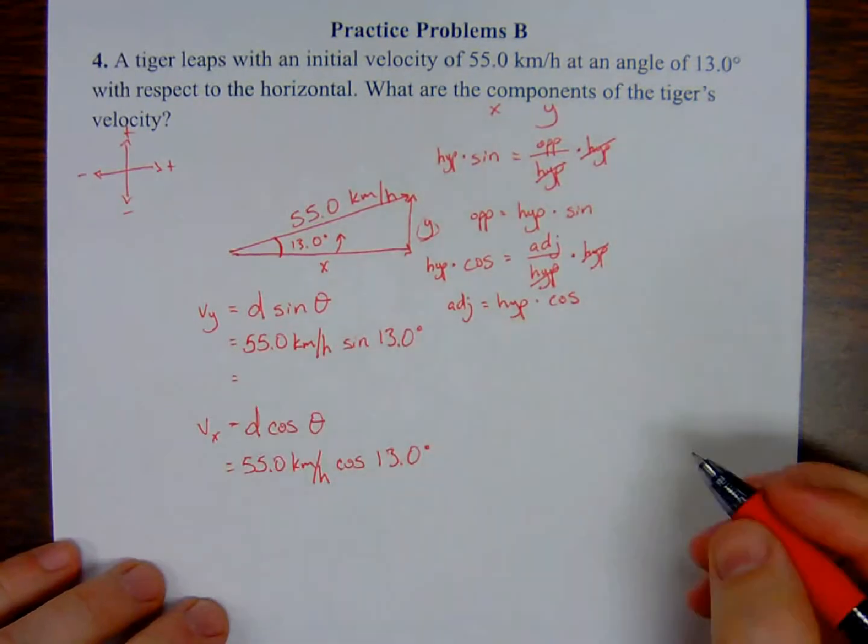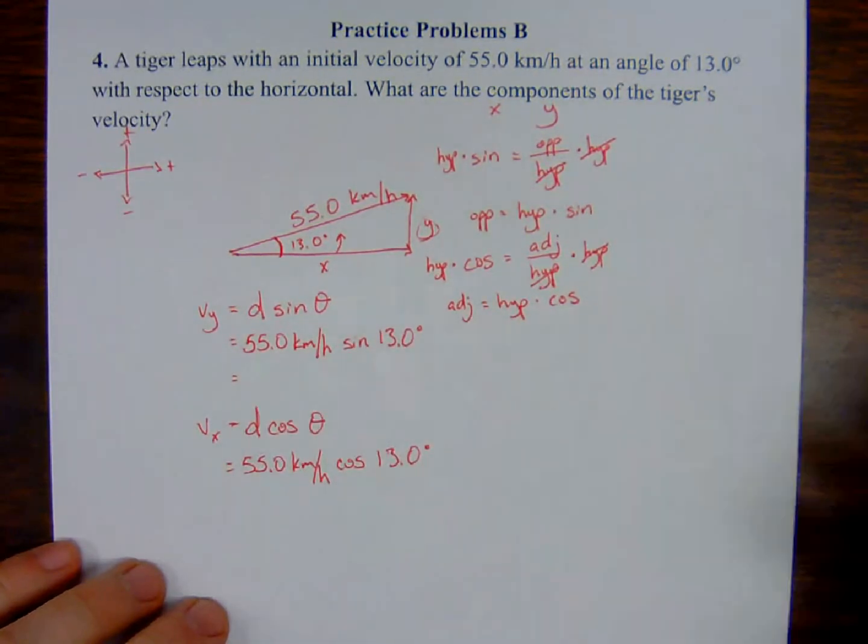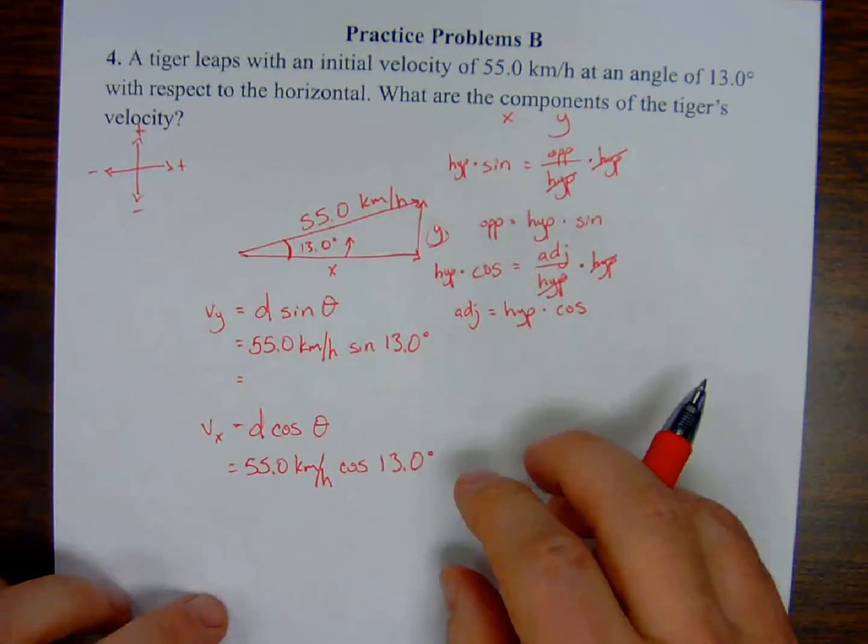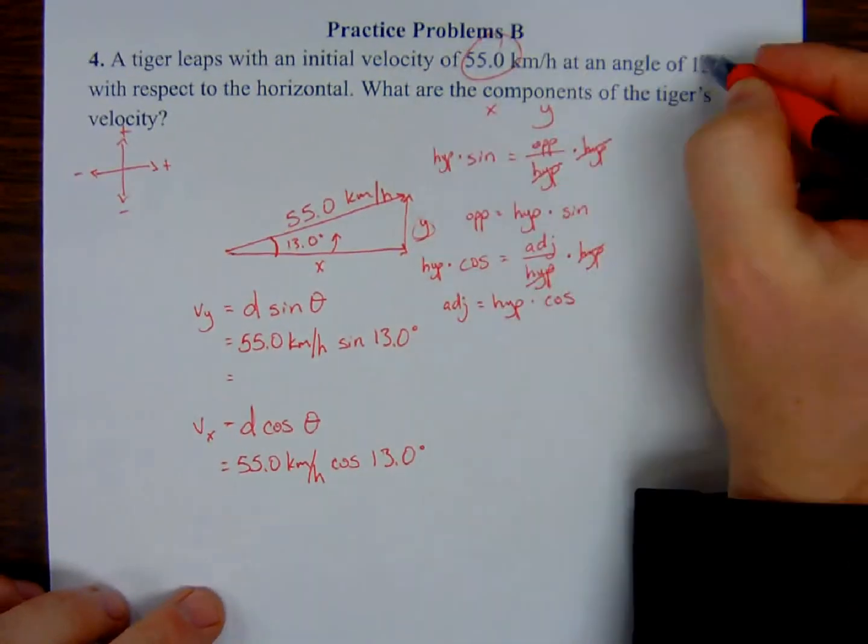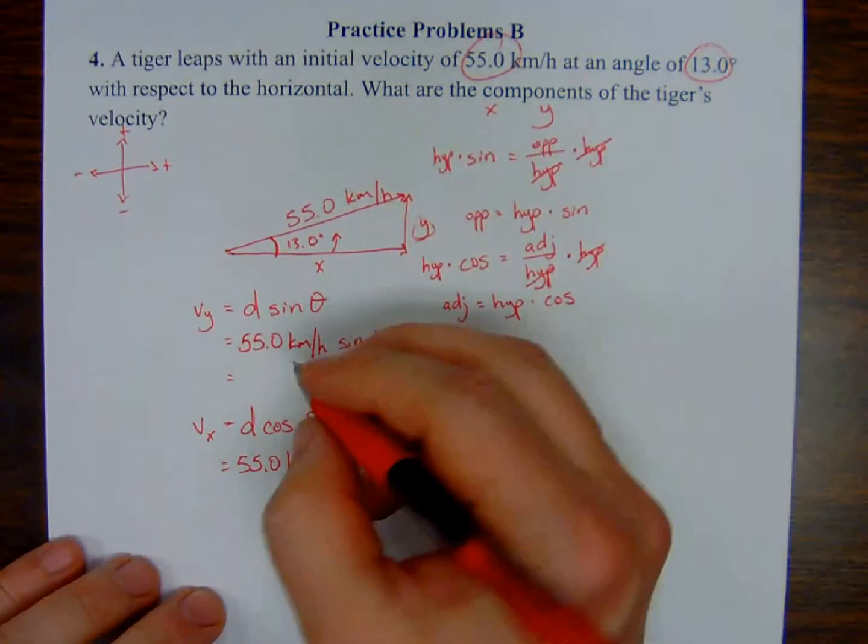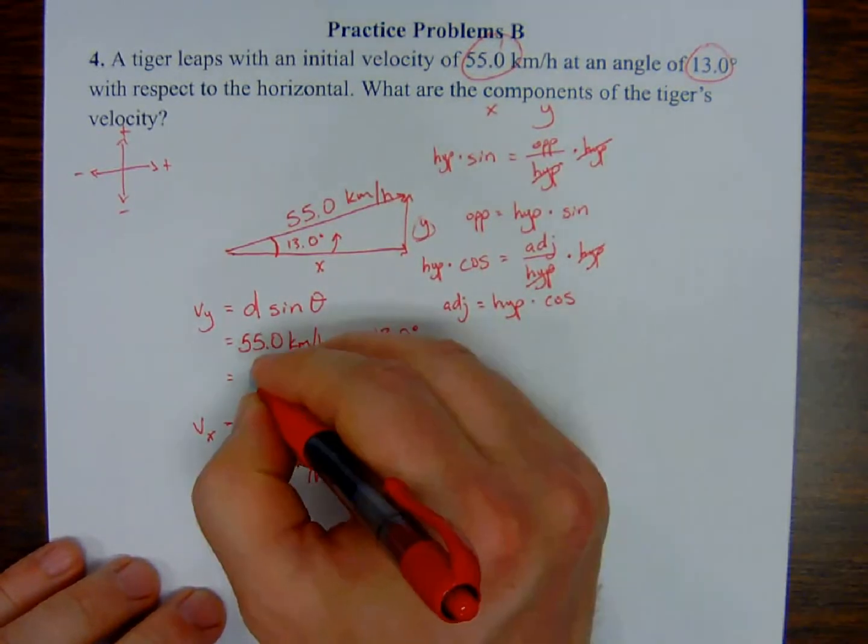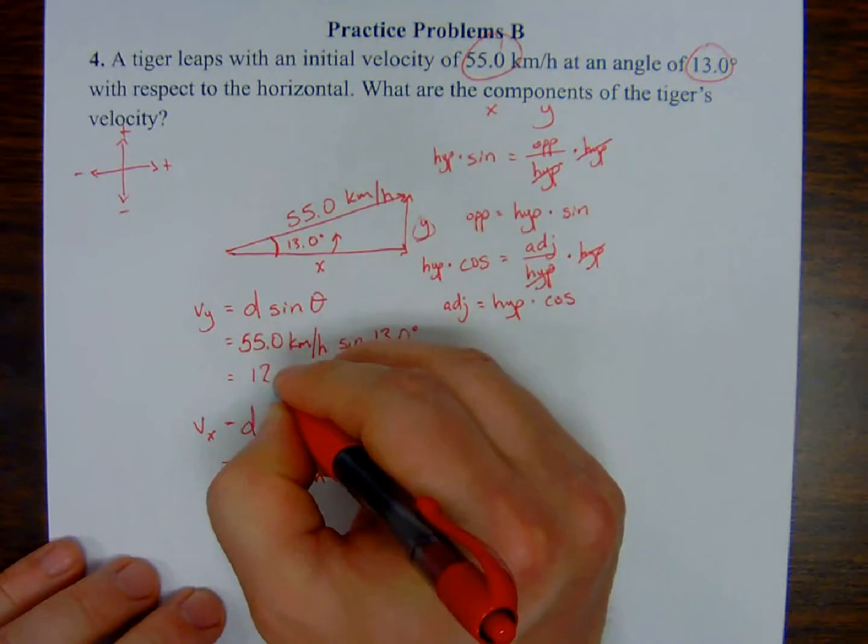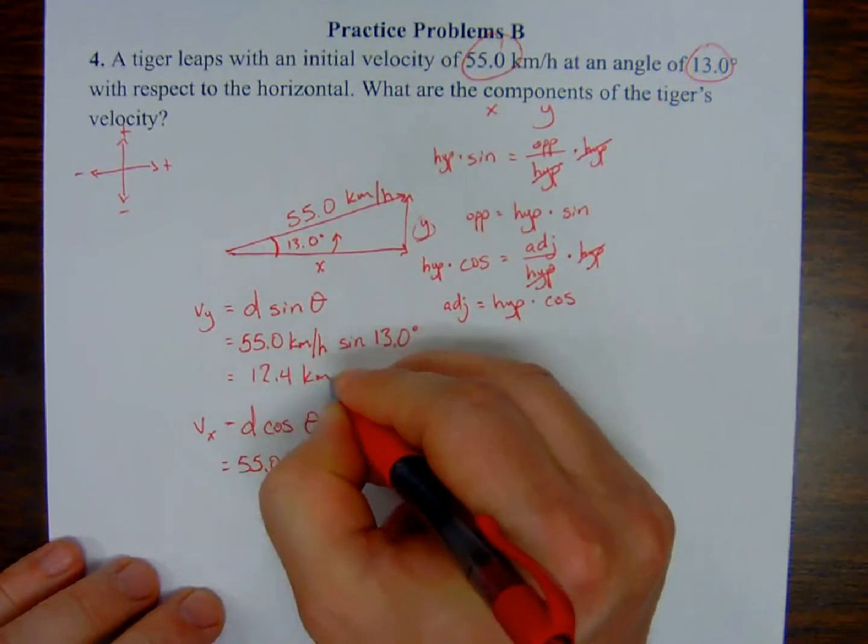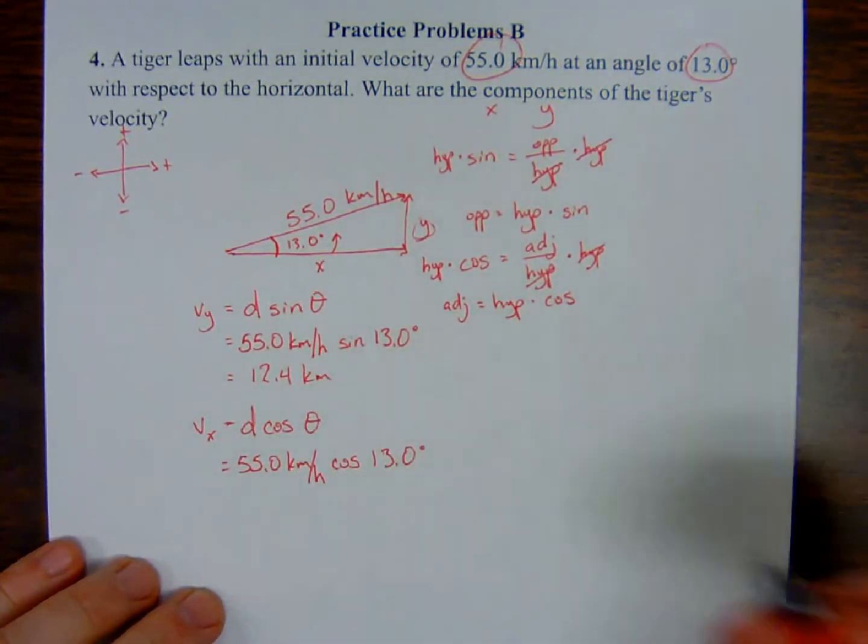For my y component, I'm going to have a final answer of 12.4 kilometers per hour up, because it's the y component, or upwards, in the vertical direction, however you want to say it.